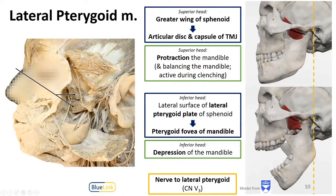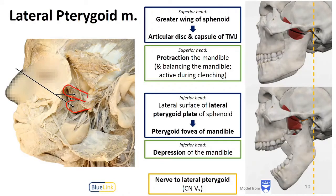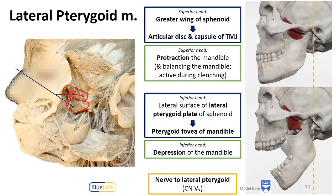The lateral pterygoid muscle actually has two heads. The superior head attaches to the greater wing of the sphenoid bone and then directly to the articular disc and capsule of the TMJ. The inferior head comes from the lateral surface of the lateral pterygoid plate and attaches back to the pterygoid fovea, right by the condylar process. Both heads attach near the TMJ.